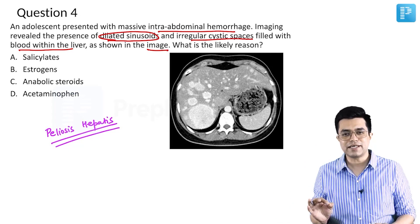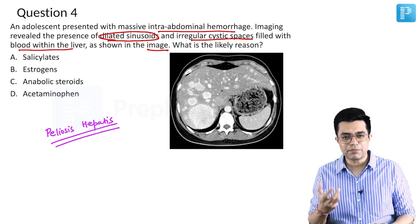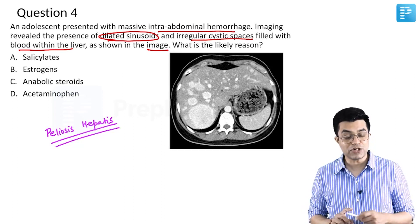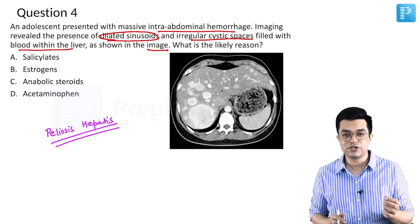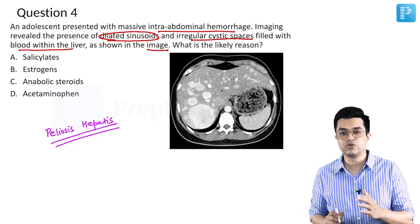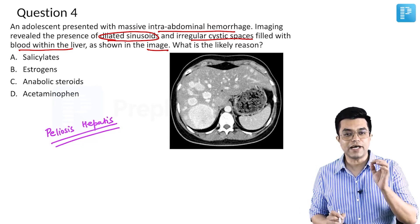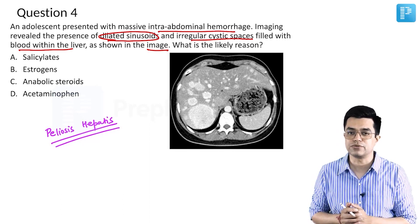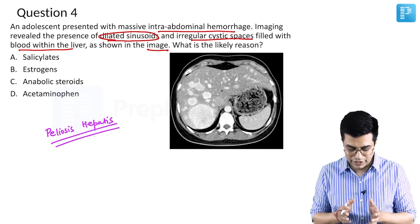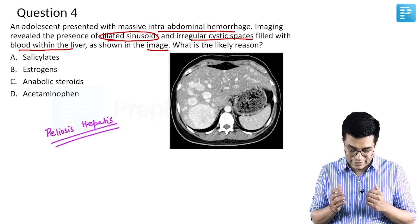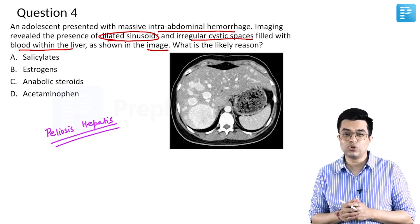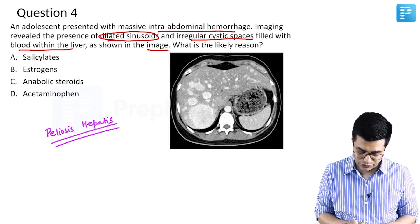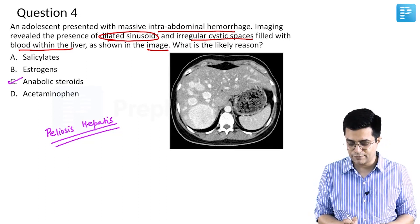Peliosis hepatis has been described to occur with multiple conditions. Among drug-induced causes, especially in the western population and in the adolescent age group, use of anabolic steroids and oral contraceptive pills have a strong association. Anabolic steroids have the maximum association and are the most likely answer here.